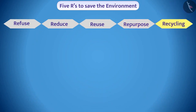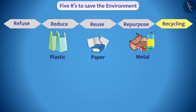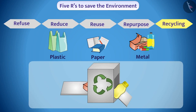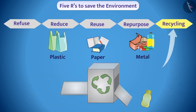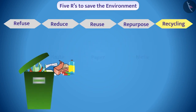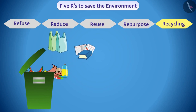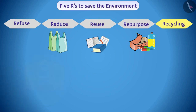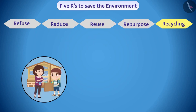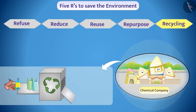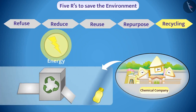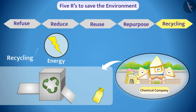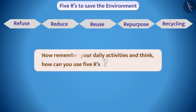The fifth R is Recycling. Items like plastic, paper, and metal can be used to make new things again — this is what we call recycling. Many recyclable items are sometimes thrown away as garbage; we should separate such items from household waste. Various people collect such items and give them to companies where they are recycled. Note that energy is required for recycling, so whenever possible we should focus on reuse.